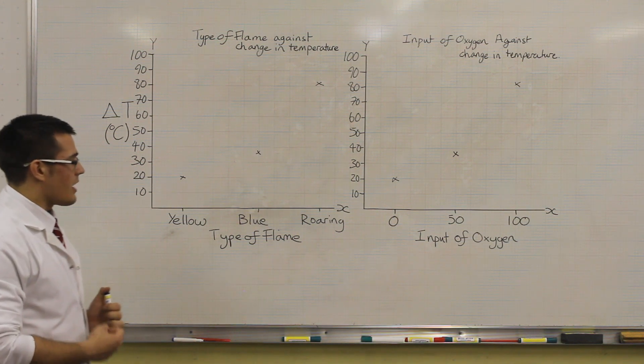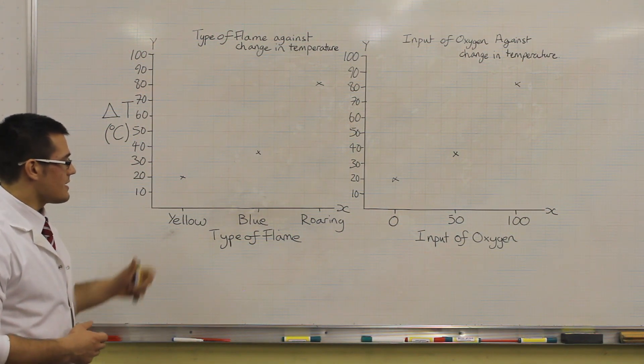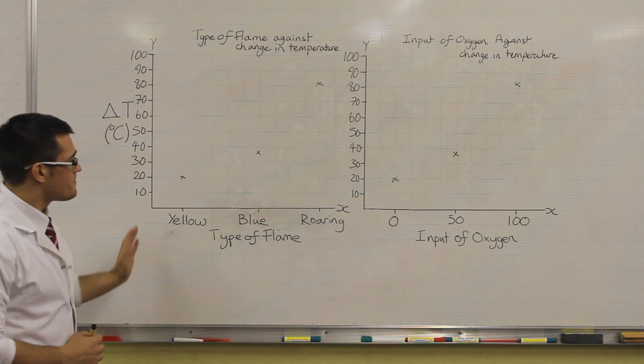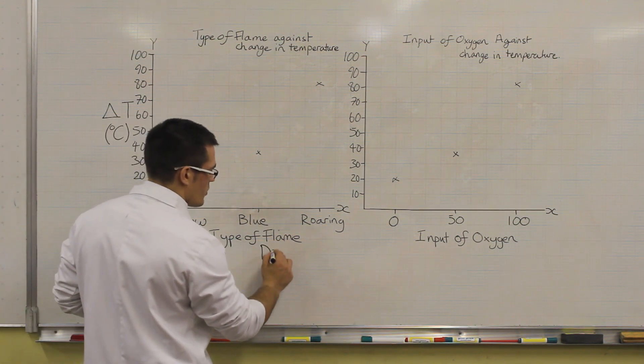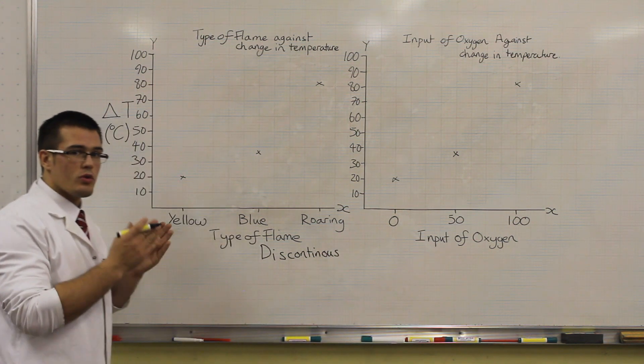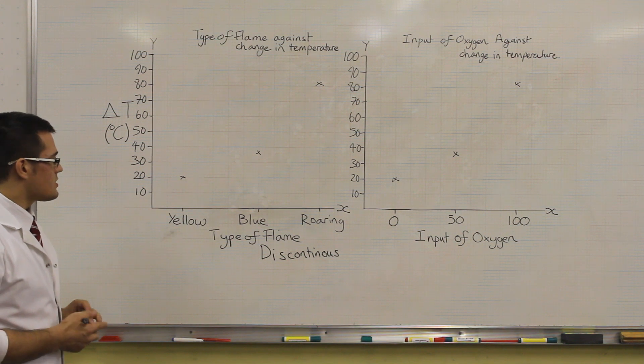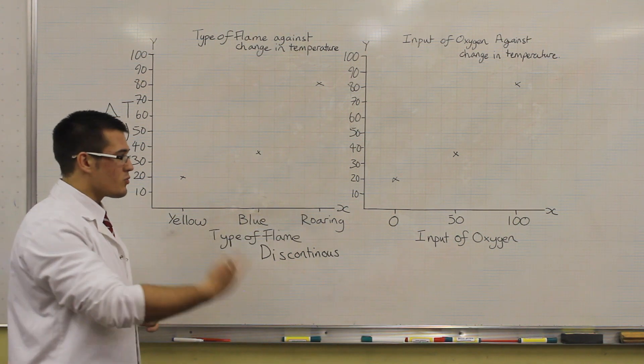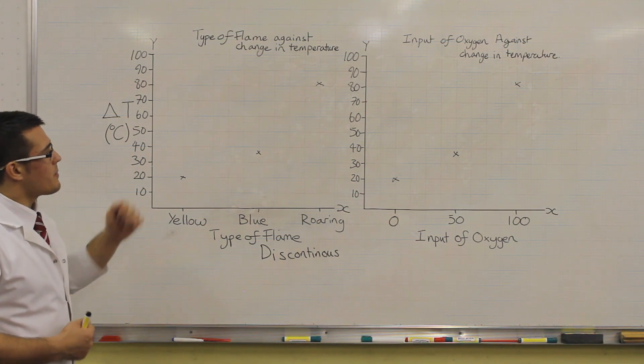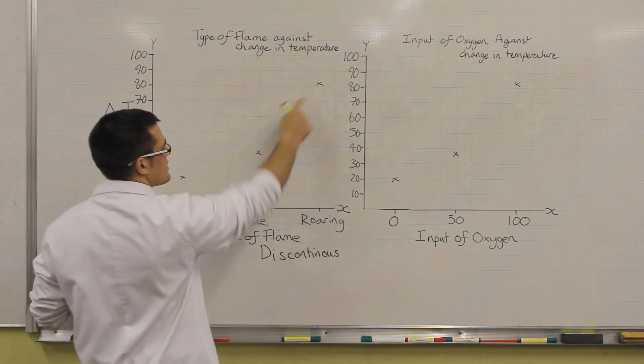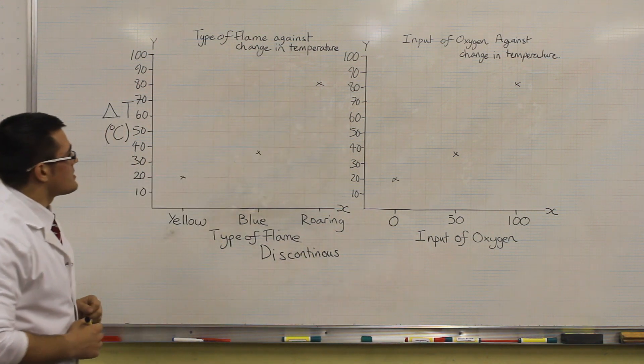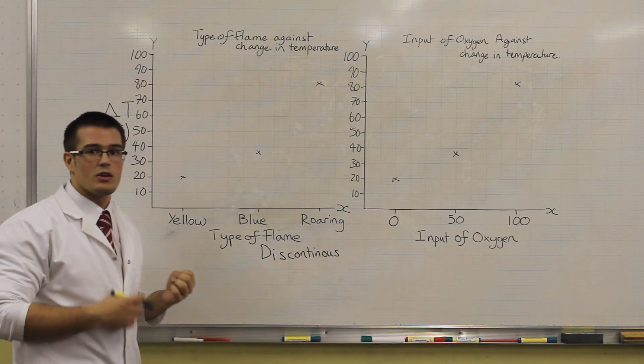If we plan an investigation and our independent variable is that we're going to change the type of flame, which is true, but if we plot a graph like this of discontinuous data, what this means is that the independent values across the bottom have no relationship to each other. This could be yellow flame, blue flame, roaring flame, green flame, red flame. But there's no mathematical connection between those. That means that if we look at our three data points for each flame, although we can clearly see that the roaring flame has a greater change in temperature, we cannot say anything quantitative.